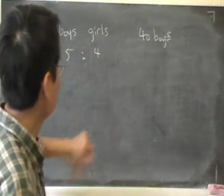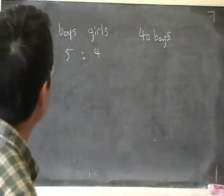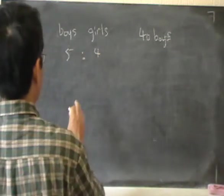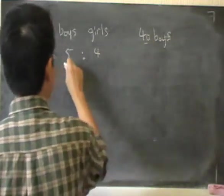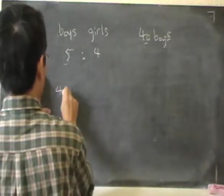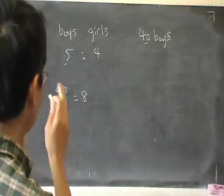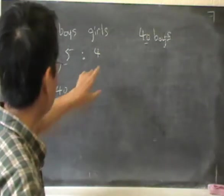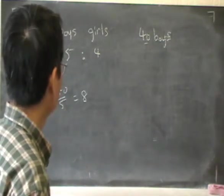So 40 boys, that means we must find the number of girls as well. And then we must add up the numbers. Right. So once again, we use the idea that we can think of the ratio as 5 parts to 4 parts. So the 40 boys corresponds to 5 parts. So one part would be 40 over 5, which is 8. So there are 8 children in one part of this ratio. So, right. We don't actually need to find the number of girls separately. We can just add up the 5 and 4. That's 9. So there are 9 parts altogether. 5 plus 4, that's 9 parts.